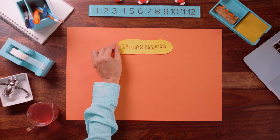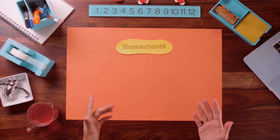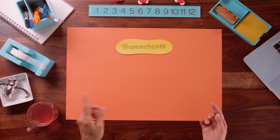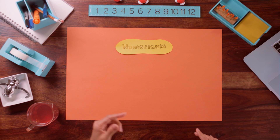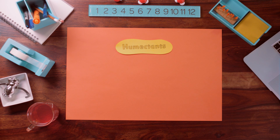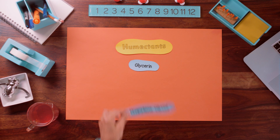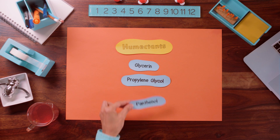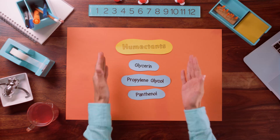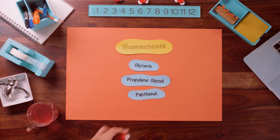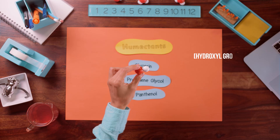Humectants come from the Latin word humectare, which means to moisten. They dial up the moisture content in the top layers of skin by attracting and retaining water. Humectants include some very common ingredients like glycerin, propylene glycol, and panthenol. Almost all have one thing in common: hydroxyl groups.